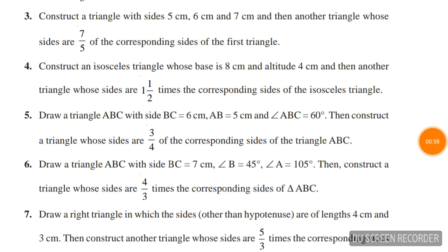Question number four: construct an isosceles triangle whose base is 8 cm and altitude is 4 cm, and then another triangle whose sides are one and a half times the corresponding sides of the isosceles triangle.